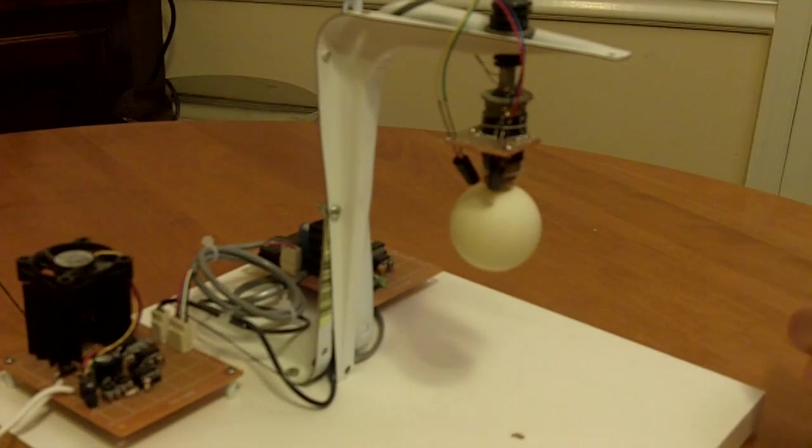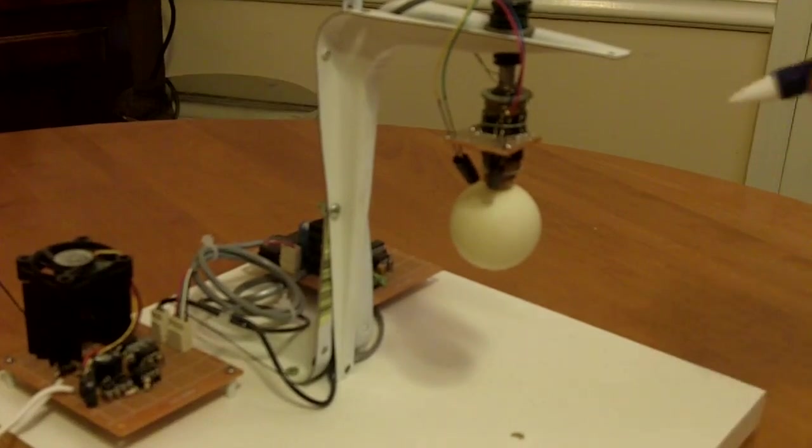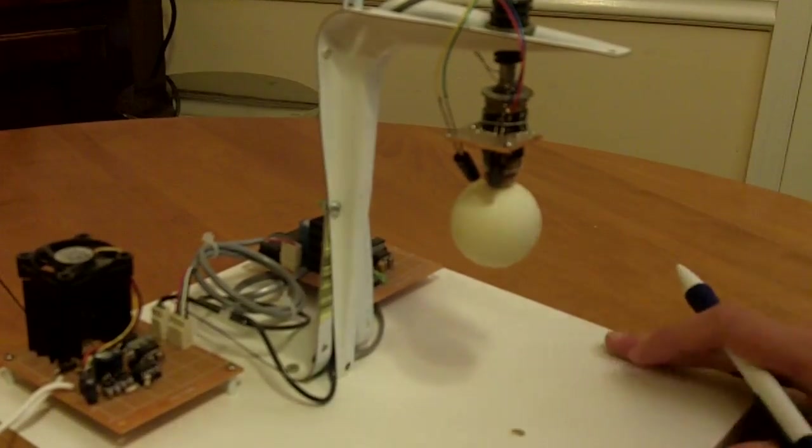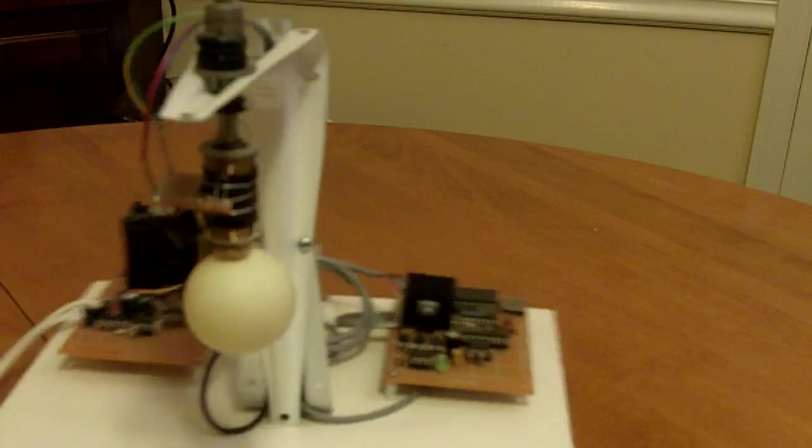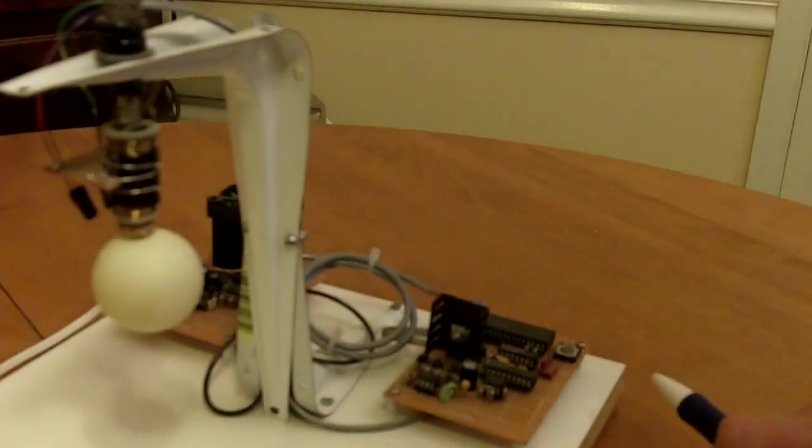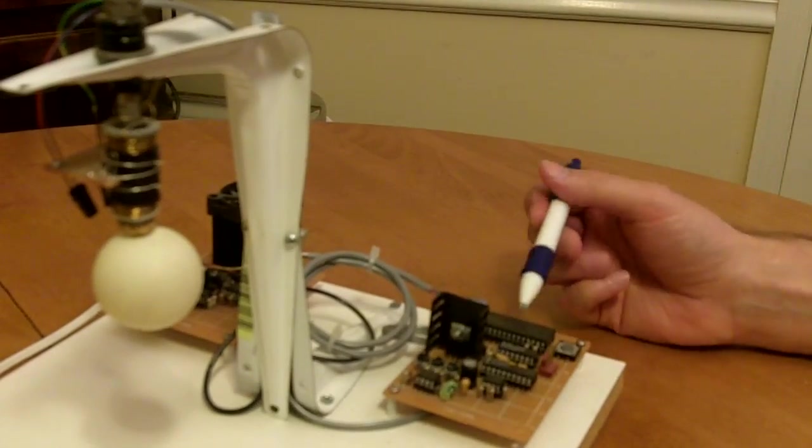And depending on how much electricity I put through it I can vary the intensity of that magnet. And the way I do that, you can see here I've got a microcontroller, in this case it's a PIC processor running at 20 megahertz.